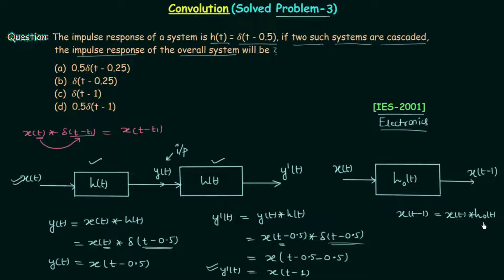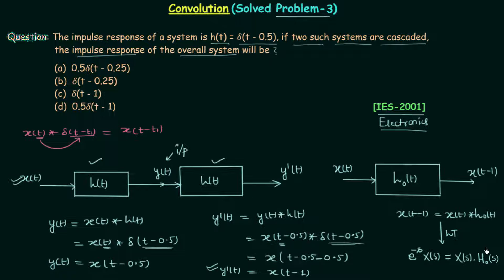It is very difficult to calculate h₀(t) in the time domain, so we will use the Laplace transform and go to the frequency domain. The Laplace transform of x(t - 1) is e^{-s} X(s), and the Laplace transform of x(t) is X(s). Convolution becomes multiplication after taking the Laplace transform, so the Laplace transform of h₀(t) is H₀(s), the transfer function. From here we can easily calculate H₀(s) = e^{-s}.